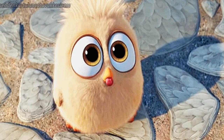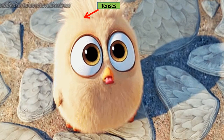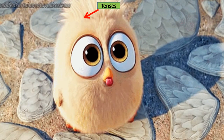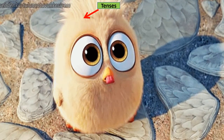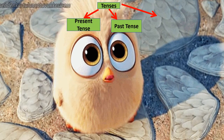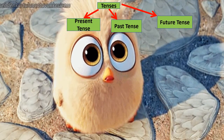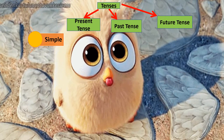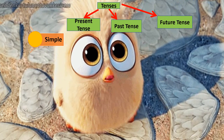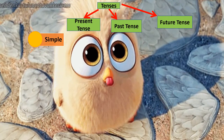Now let us understand the different types of tenses. There are three types: present, past, and future. These three types are further divided into simple, continuous, perfect, and perfect continuous tense. Now let us see the formulas — once you see these formulas you will be able to frame sentences yourself.